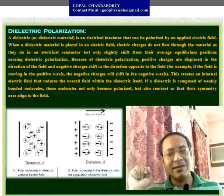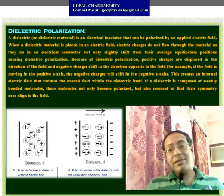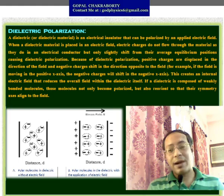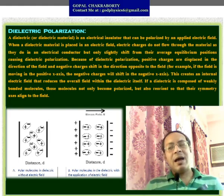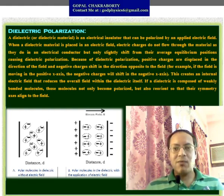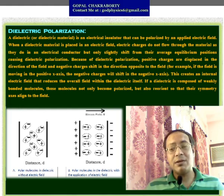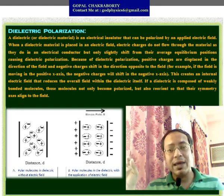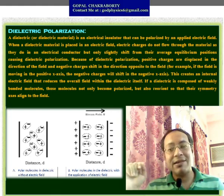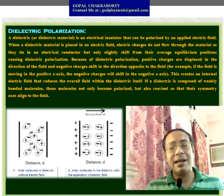Dielectric polarization occurs only due to the application of an external electric field; when that field is withdrawn, all molecules return to their equilibrium positions and become neutral again. Dielectric polarization is mathematically expressed as dipole moment per unit volume. So capital P (a vector quantity) denoting dielectric polarization equals the limit as ΔV→0 of ΔP/ΔV, where ΔP is the change of dipole moment and ΔV is a small volume element of the dielectric material.